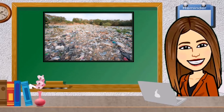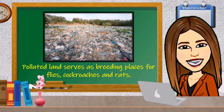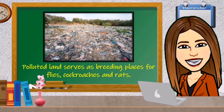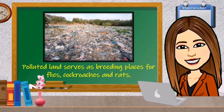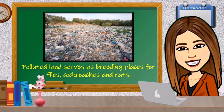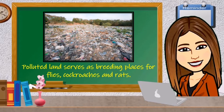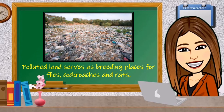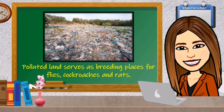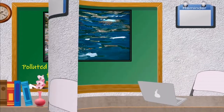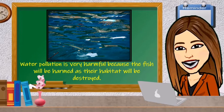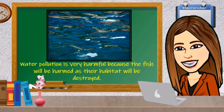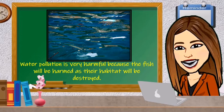Polluted land serves as breeding places for flies, cockroaches, and rats. These pests carry germs that cause diseases, hence hazardous to one's health. Water pollution is very harmful because the fish will be harmed as their habitat will be destroyed.